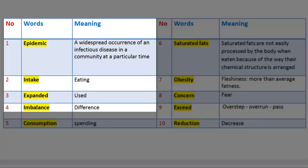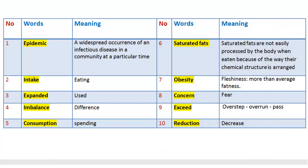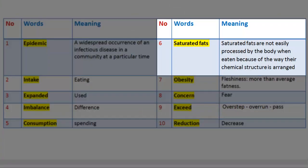Number 4. Word: Imbalanced. Meaning: Difference. Number 5. Word: Consumption. Meaning: Spending. Number 6. Word: Saturated fats. Meaning: Saturated fats are not easily processed by the body when eaten because of the way their chemical structure is arranged.